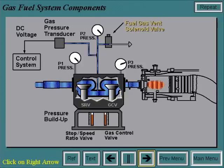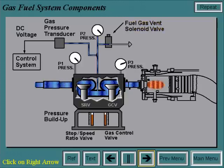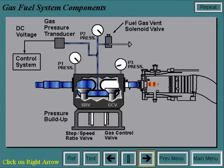The fuel gas vent solenoid valve vents the volume between the stop speed ratio valve and the gas control valve when the solenoid is de-energized. This valve is closed during operation. When it is open, it ensures that during the shutdown period, fuel gas pressure will not build up between the stop speed ratio valve and that no fuel gas will leak past the closed gas control valve.